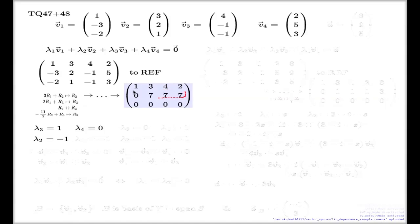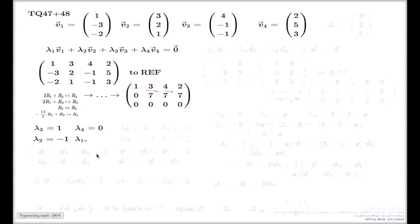For λ1, from the first row: λ1 + 3(-1) + 4(1) + 2(0) = 0, which gives λ1 = -1.